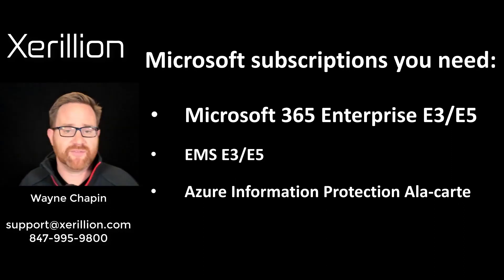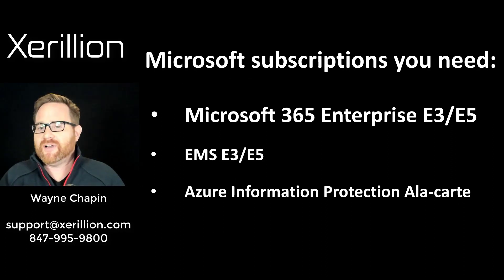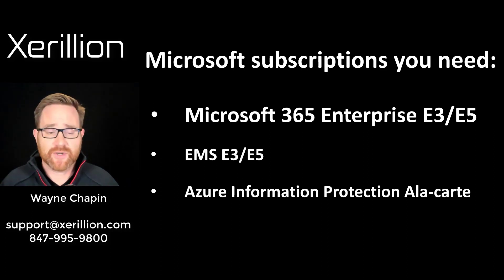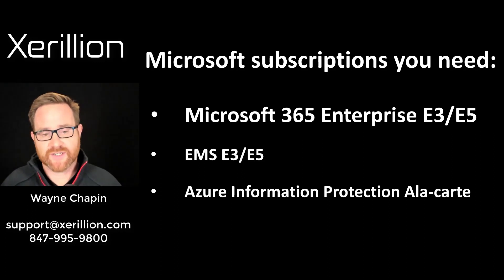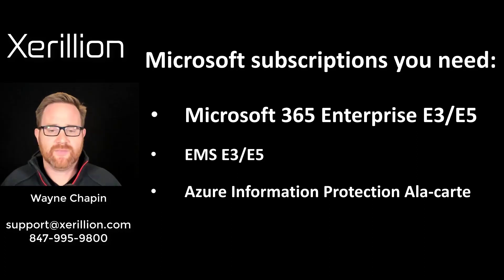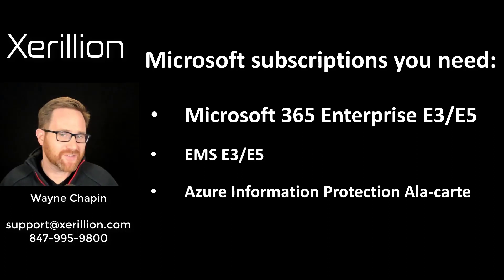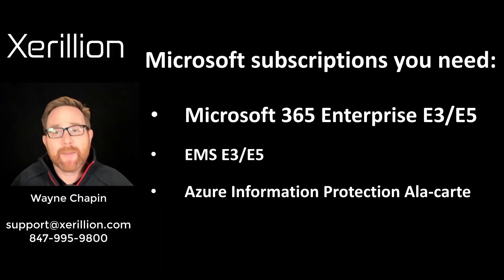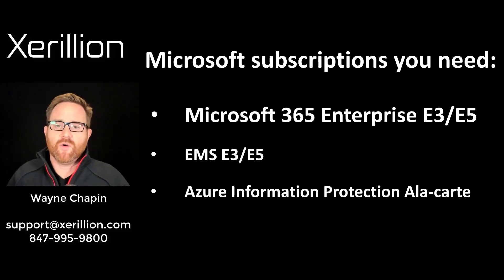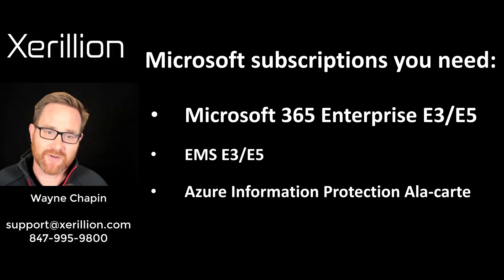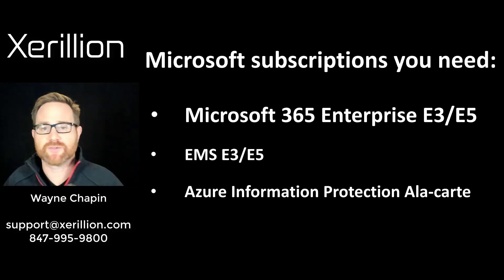Here are the Microsoft subscriptions you need. Microsoft 365 Enterprise E3 or E5 — that's what we install almost 100% of the time now. You could go down to just EMS E3 or E5, which stands for Enterprise Mobility and Security, but I'd say let's just have a conversation around Microsoft 365 Enterprise. You could also do Azure Information Protection a la carte, but Microsoft 365 Enterprise E3 and E5 are complete total enterprise solutions. You can't build anything like this on premises — so Wayne's pick of the day is Microsoft 365 Enterprise E3 or E5.